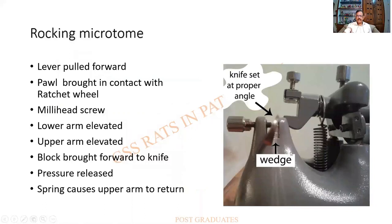At higher magnification, the knife holder is visible and there is a block holder. The block moves against the fixed knife; the lever is pulled forward and brought in contact with the ratchet wheel. There is a micrometer screw; the upper arm and lower arm allow the block to move towards the knife, and when pressure is released the spring causes the upper arm to return.